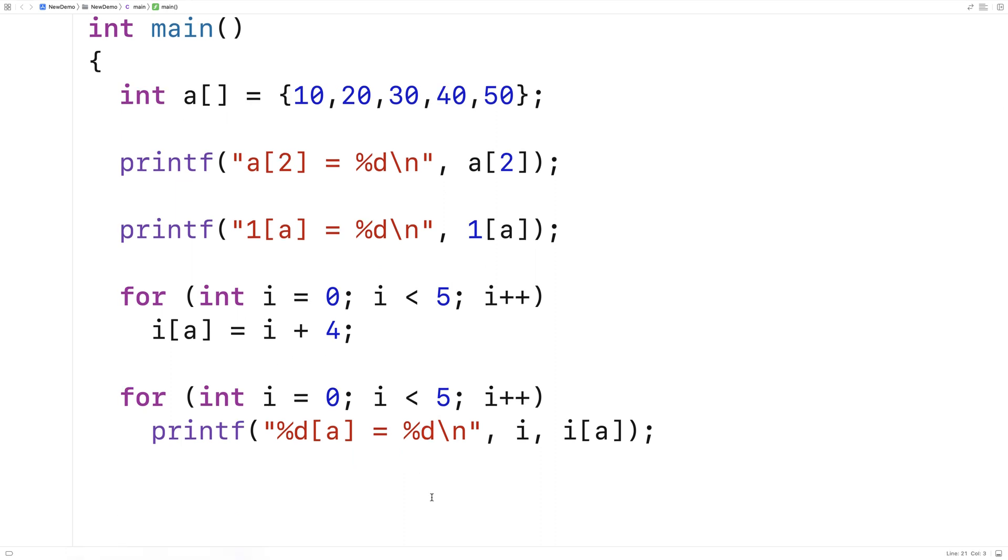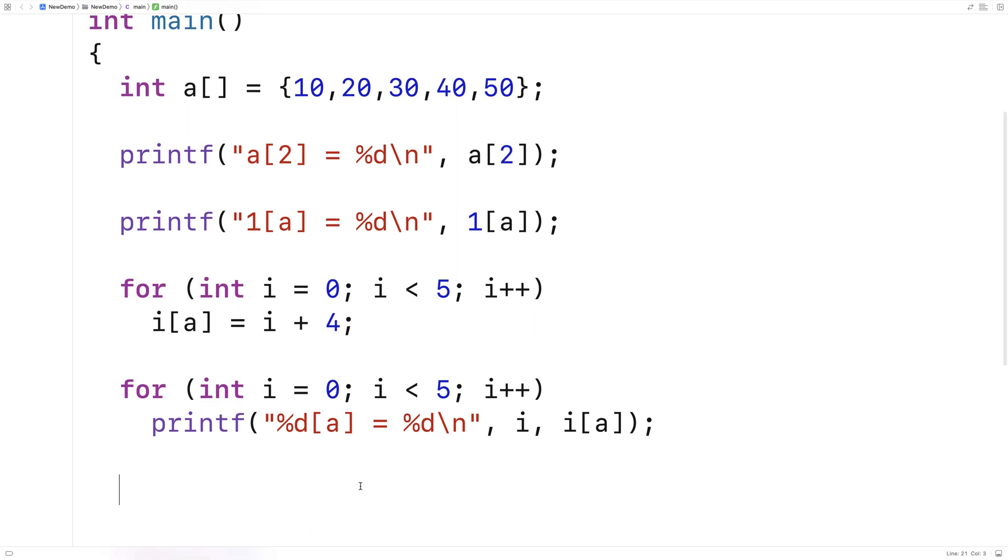So what's going on here that this is actually working? So what's happening is that this syntax here of the array name followed by brackets with the index inside of them is really a syntactic sugar we could say for the pointer notation for accessing an array.